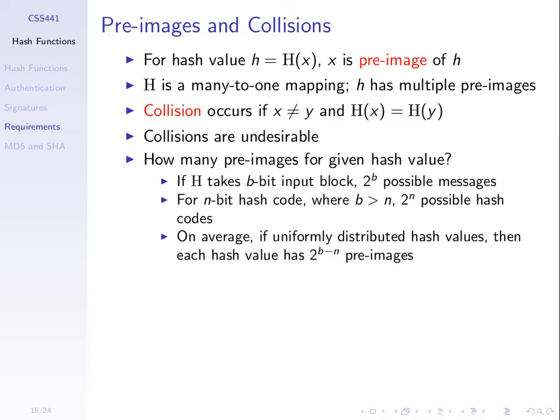We define a collision as occurring if for two different pre-images, X and Y — two different messages — the hash values are the same. That's what we understand as a collision. We don't want it to be easy for the attacker to find collisions. If there was a 1,000-bit message and a 20-bit hash value, then there are 2 to the power of 980 messages that map to the same hash value. Each hash value has on average 2 to the power of B minus N pre-images.